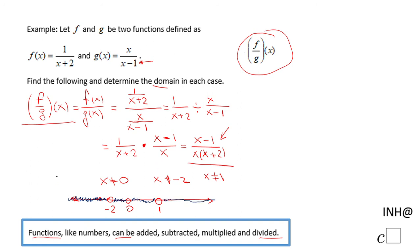How do we write this in interval notation? Negative infinity to negative 2, union negative 2 to 0, union 0 to 1, and the last interval is 1 to infinity. This is the interval notation for x cannot be 0, negative 2, or 1.